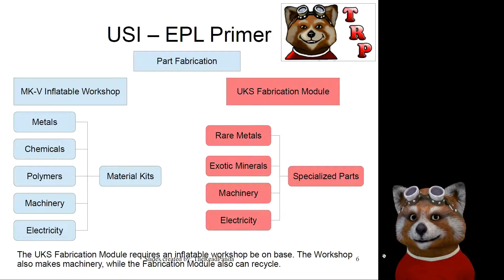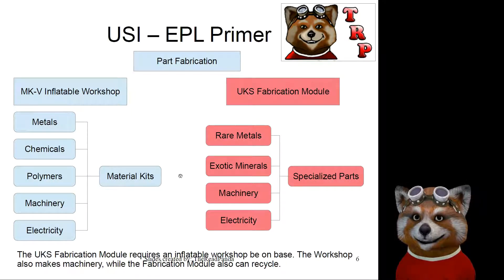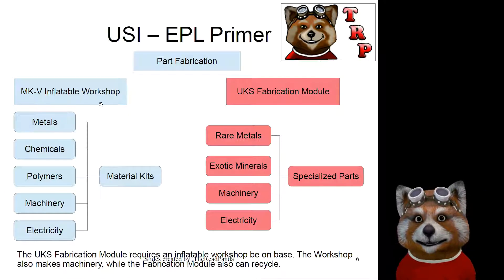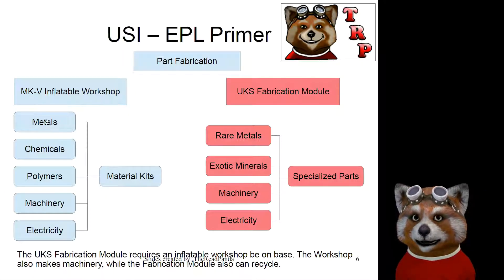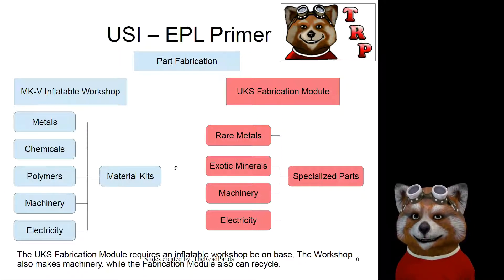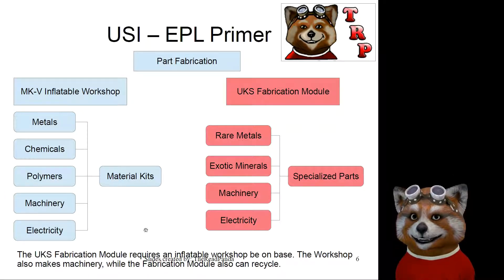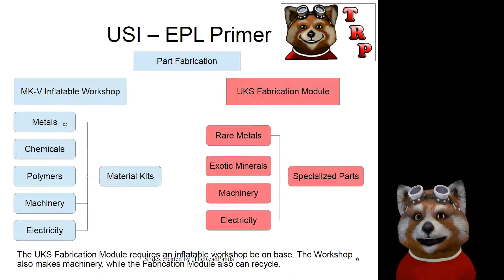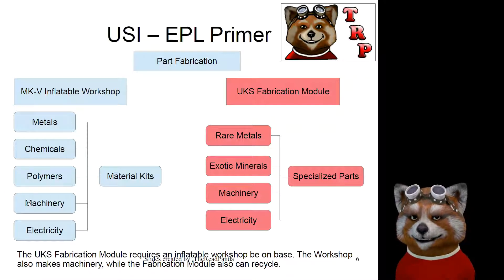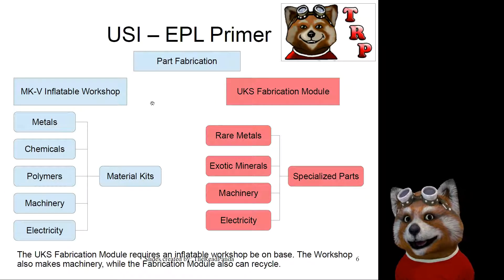Once you've got your materials, if you get an inflatable workshop down there, you can turn metals, chemicals, polymers, machinery, and electricity into material kits. Material kits are fairly easy to produce in early game as long as you've got access to metals, chemicals, and polymers. Everything also needs machinery, and we'll talk about that in a little bit.